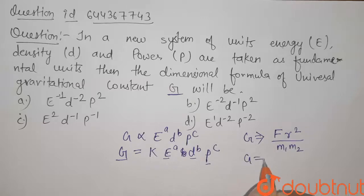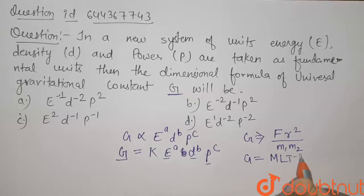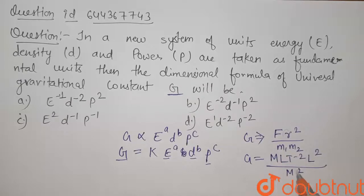So the dimension of G will be, that is force of the dimension MLT minus 2, R is the distance so its dimension will be L2 divided by M1 and M2 are masses, therefore it will be M2. So G has the dimension of M minus 1 L3 T minus 2. This is the dimension for gravitational constant.